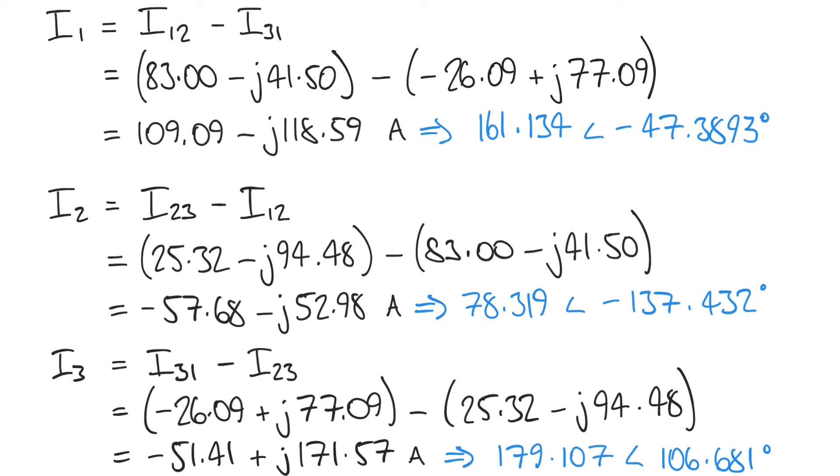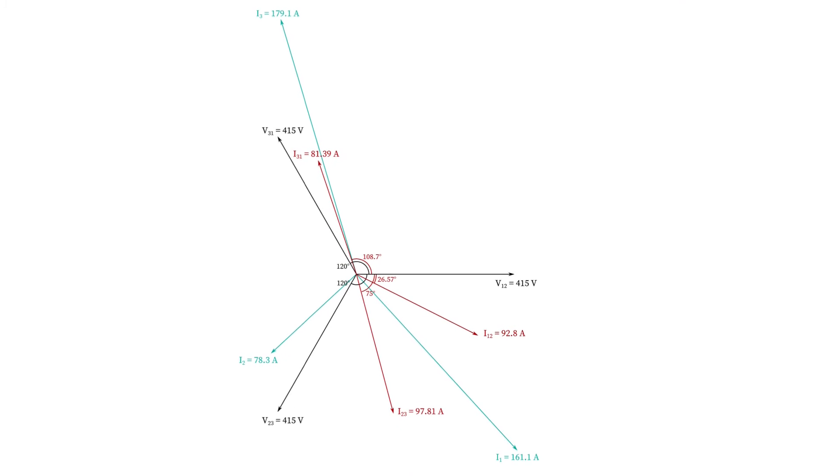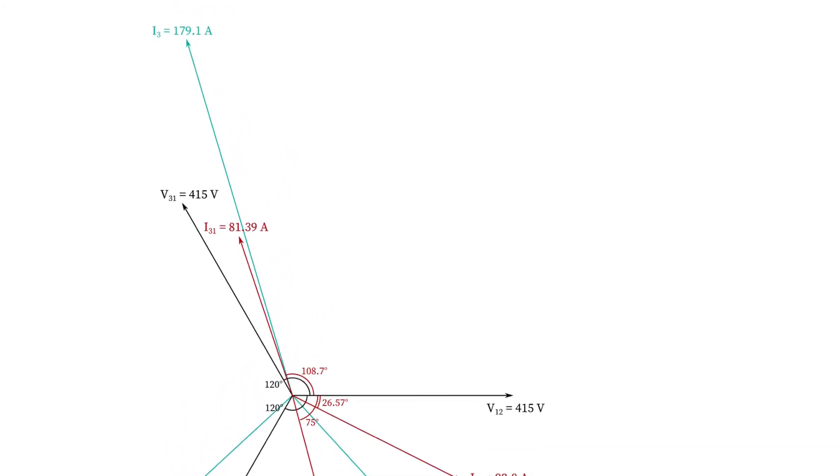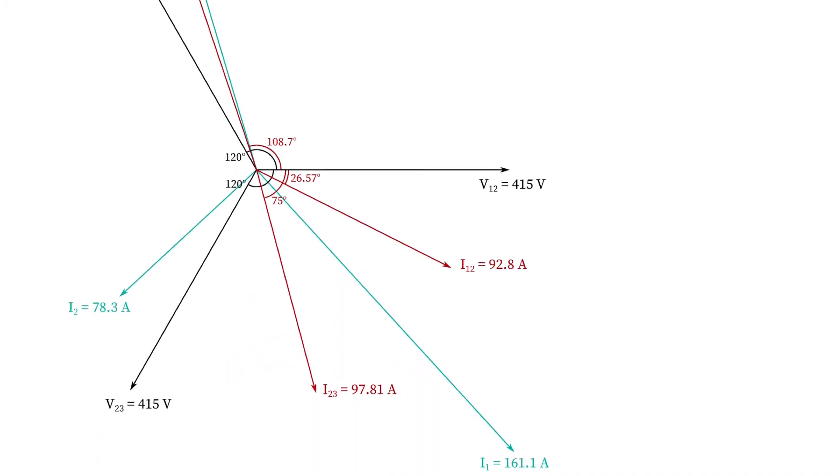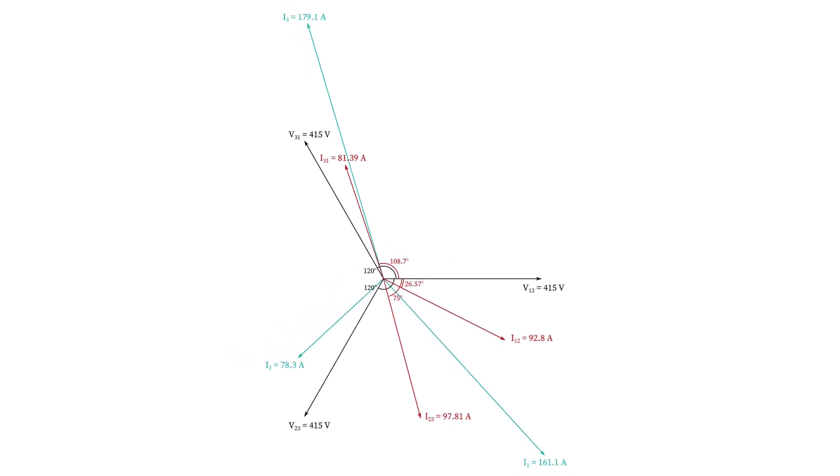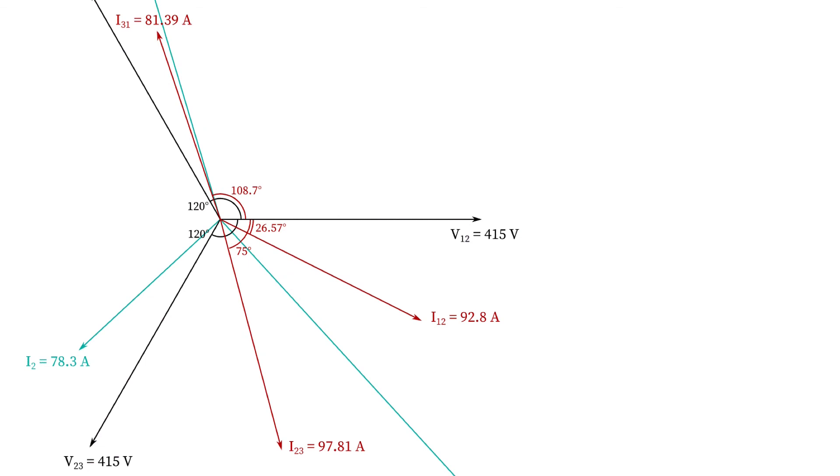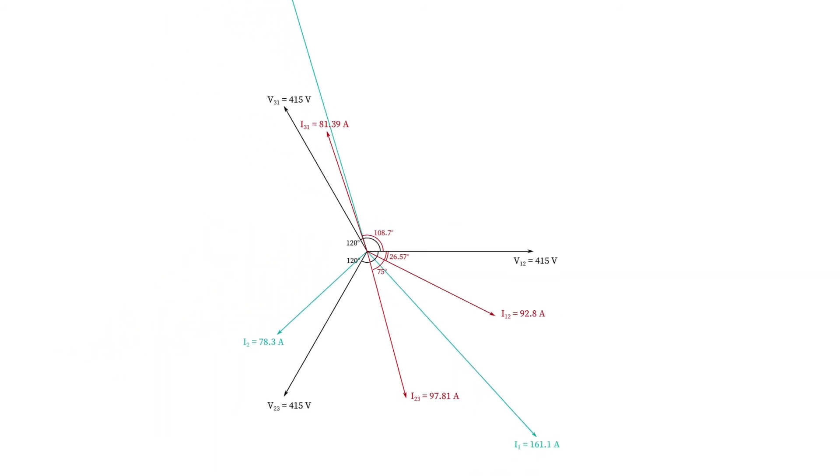Last thing to do is to represent all of these on a phasor diagram, and we get something that looks like this. If you've been following our previous videos where we looked at the balanced delta network, we can hopefully see a big difference here. First of all, in the balanced delta network we noticed this consistent phase shift of 30 degrees between the phase currents and the line currents. That's not the case here. We don't have the nice symmetrical evenly spaced currents anymore. Here are phase currents which we worked out originally in red—I12, I23 and I31.